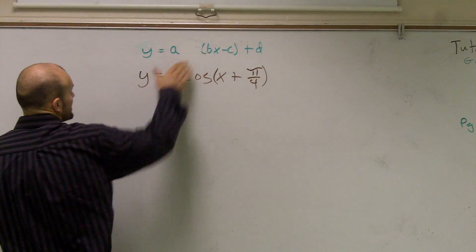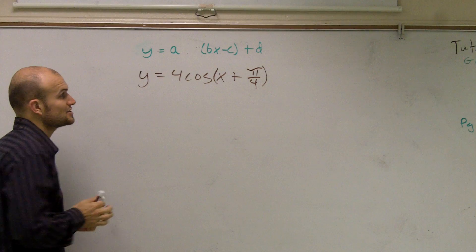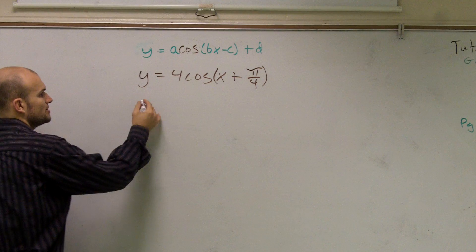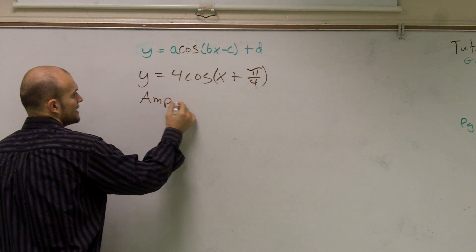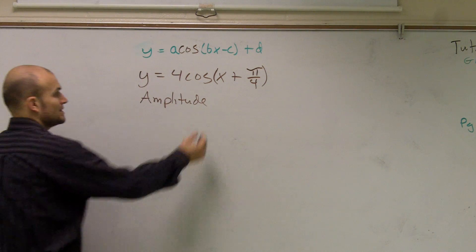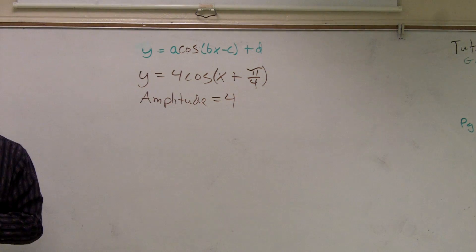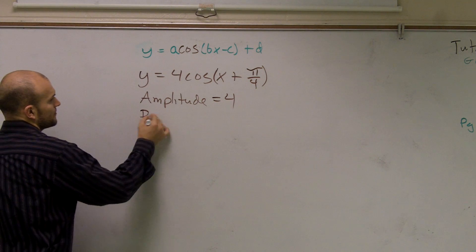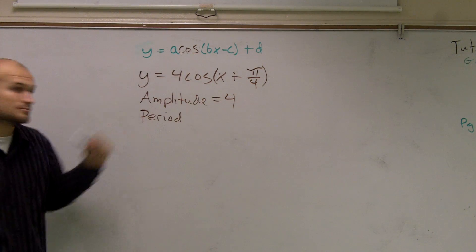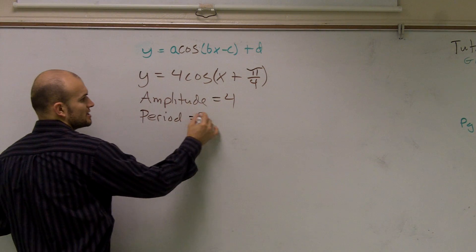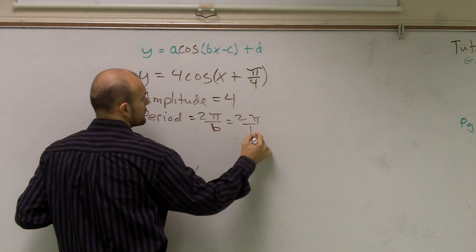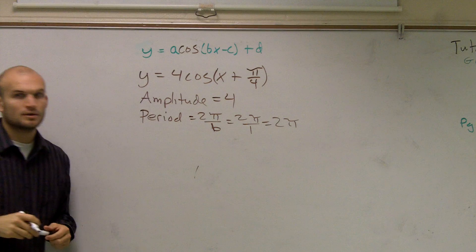What we're going to do is show you how to use a translation. We'll find the amplitude and period really quickly. The amplitude is the absolute value of a, so the absolute value of four gives me four. The period is two pi over b, where b is one, so that's two pi over one, which equals two pi.